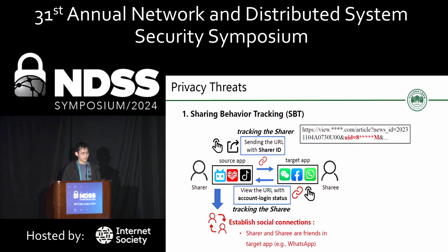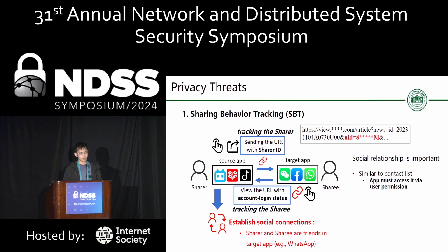In conclusion, the source app can establish social connections between the sharer and sharee. In other words, the source app can recognize that the sharer and sharee are friends in the target app, like WhatsApp. Social relationships contain significant user privacy data, similar to the user contact list that apps must access via user permission. So sharing behavior tracking is akin to the source app bypassing permissions and gaining access to the user contact list on the target app.